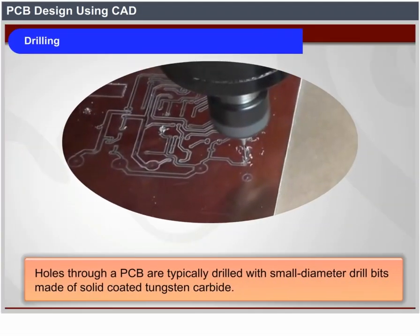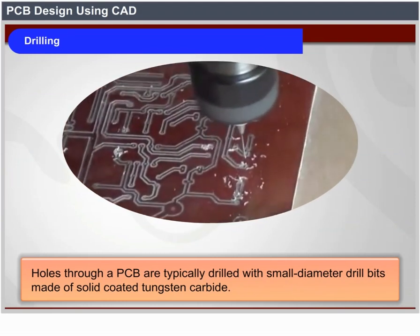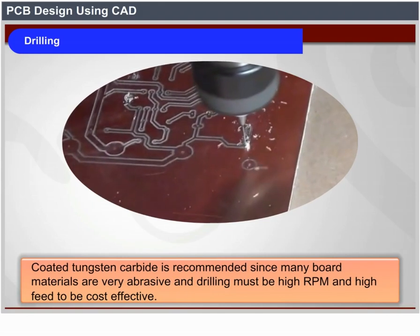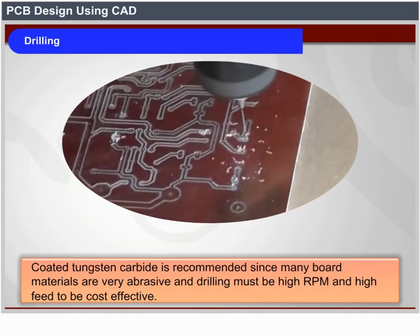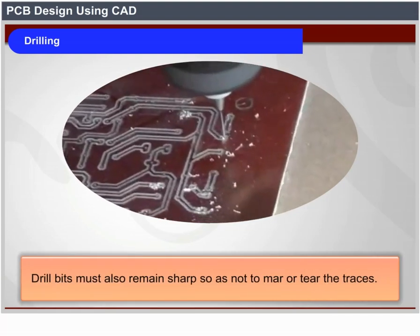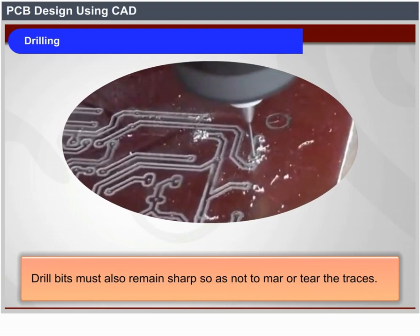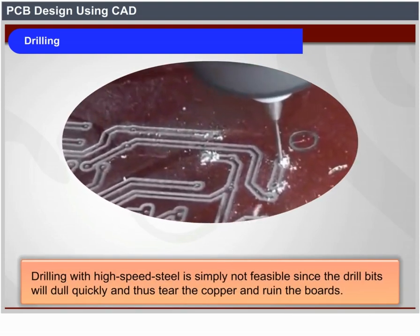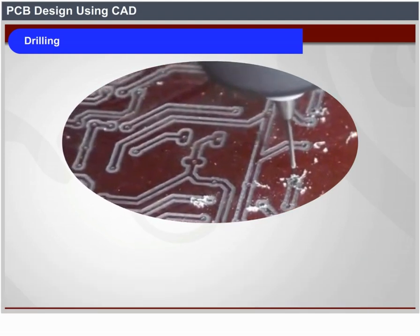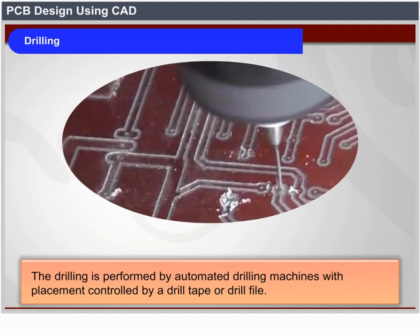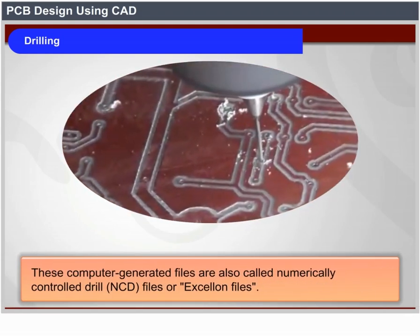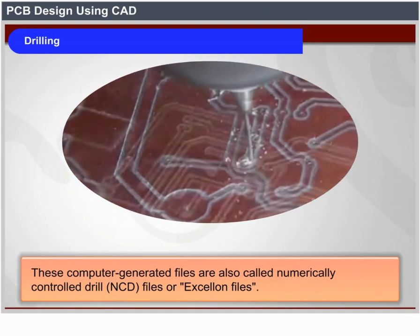Drilling: holes through a PCB are typically drilled with small-diameter drill bits made of solid coated tungsten carbide. Coated tungsten carbide is recommended since many board materials are very abrasive and drilling must be high RPM and high feed to be cost effective. Drill bits must remain sharp so as not to mar or tear the traces. Drilling is performed by automated drilling machines with placement controlled by a drill tape or drill file. These computer-generated files are also called numerically controlled drill (NCD) files or Excellon files.